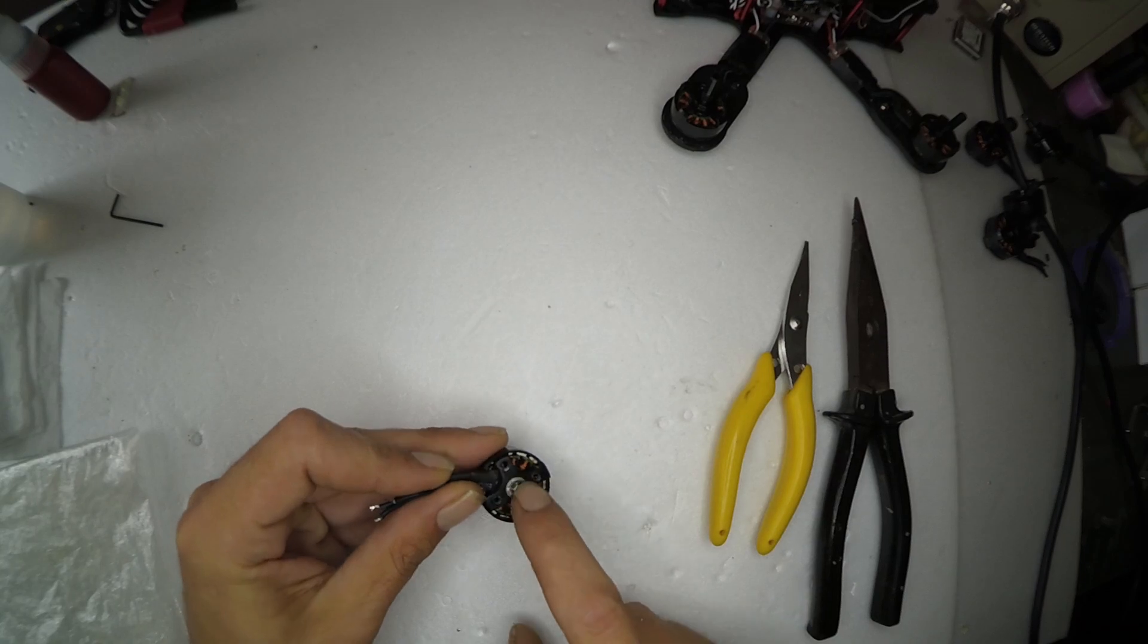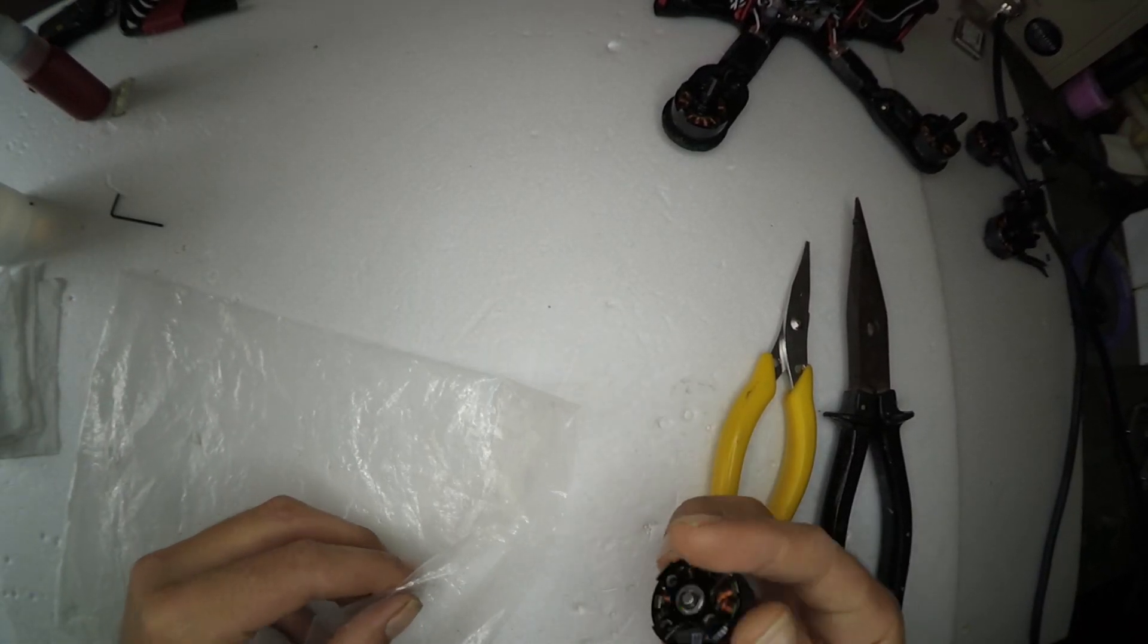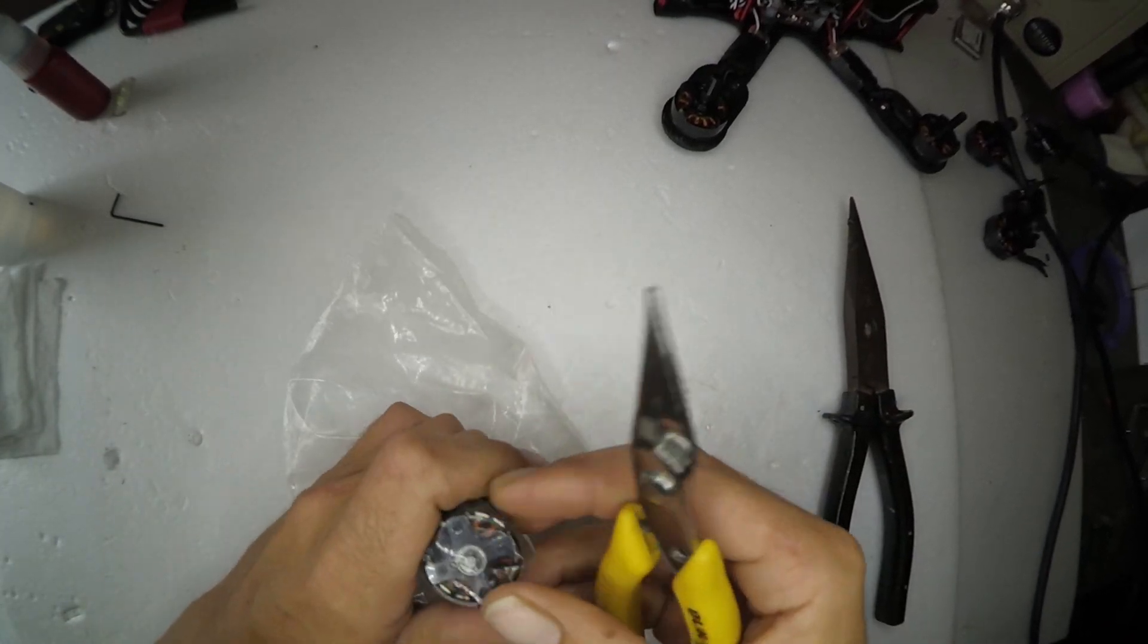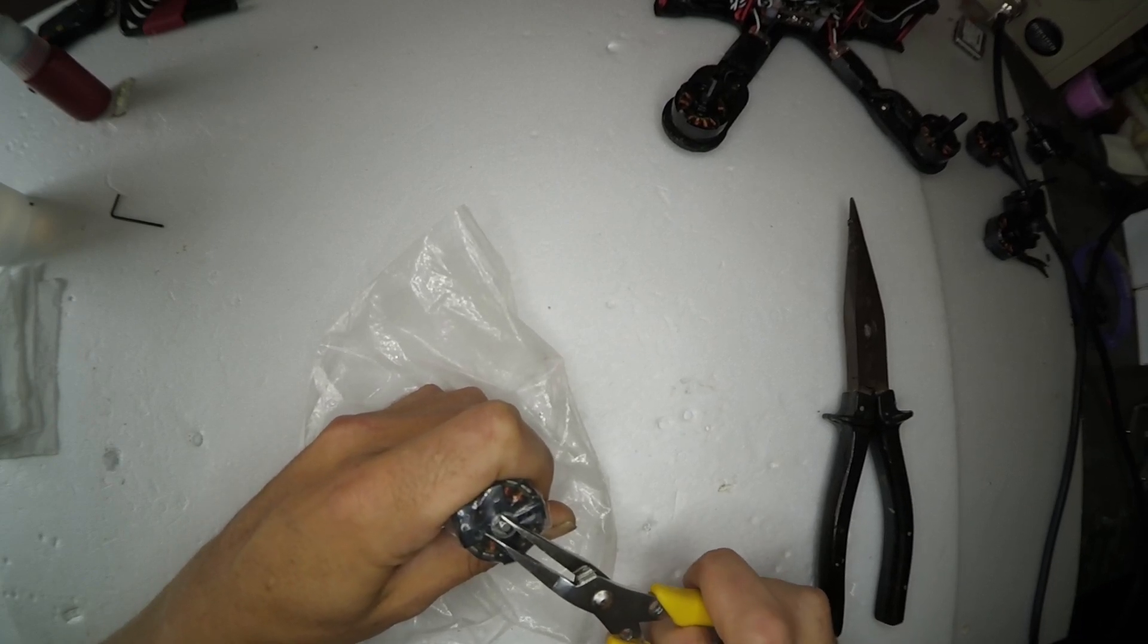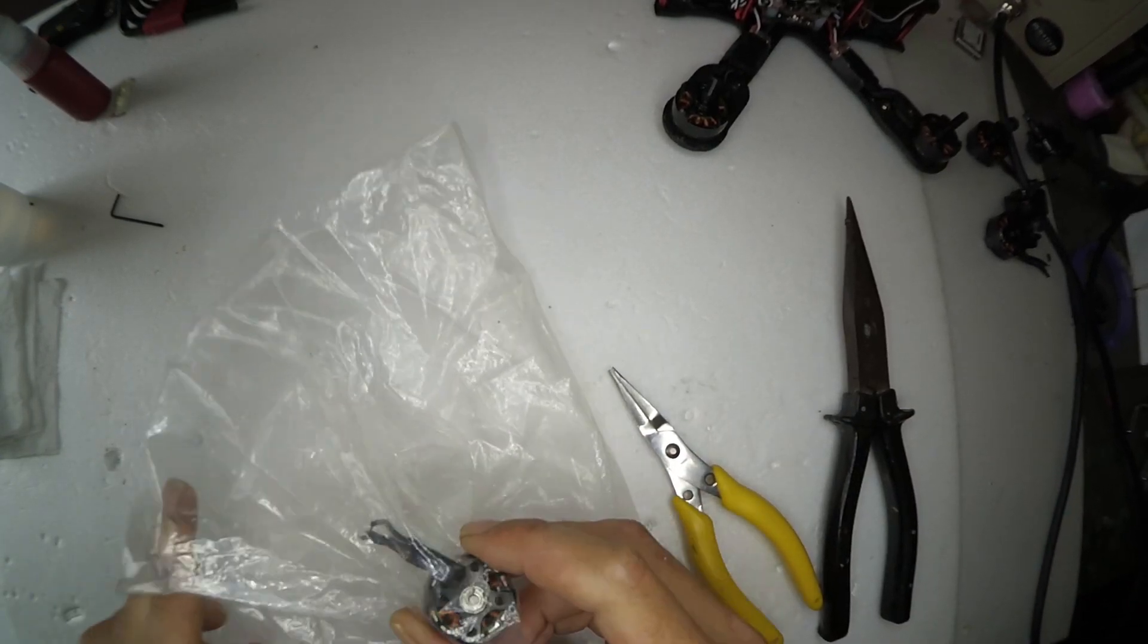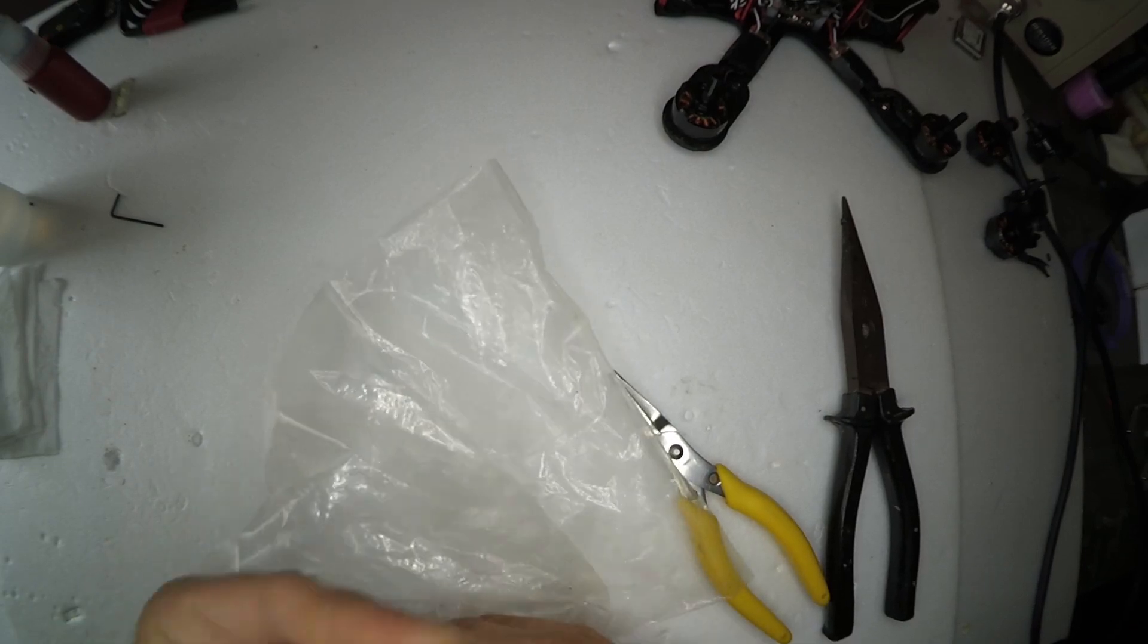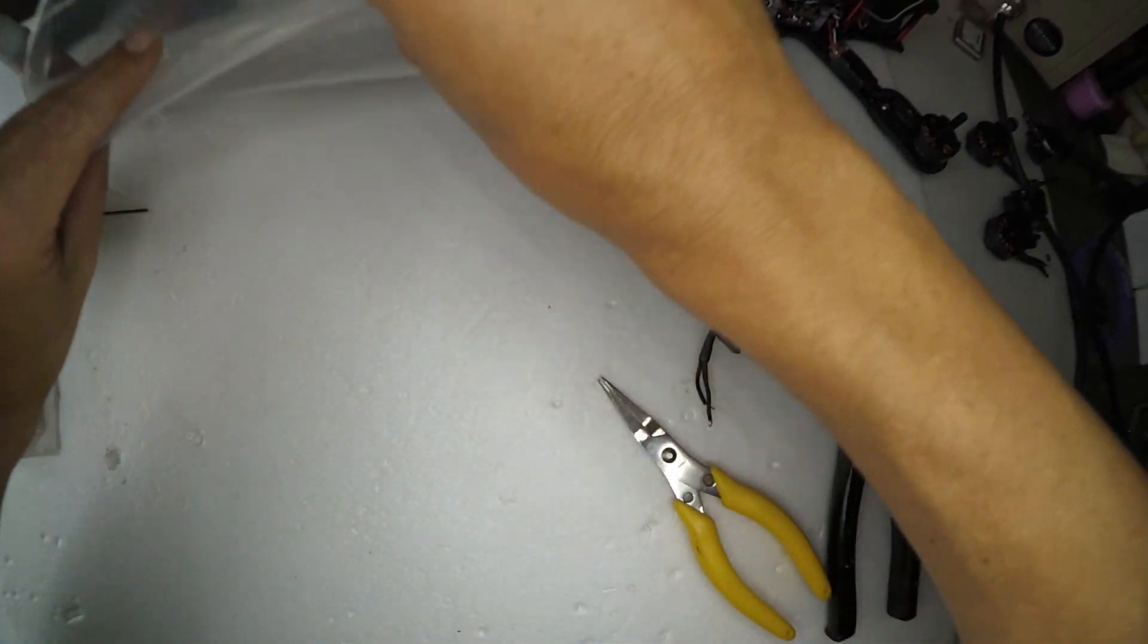First things first, we're going to have to remove our E-Clip. So, plastic bag. Pop our motor in the bag. Once again, like the last time, you get one end on the shaft, one end on the clip. So, push. And off it comes. Keep that in a safe place.